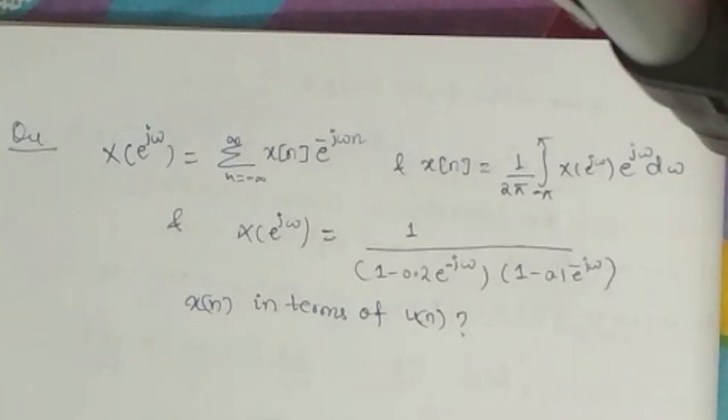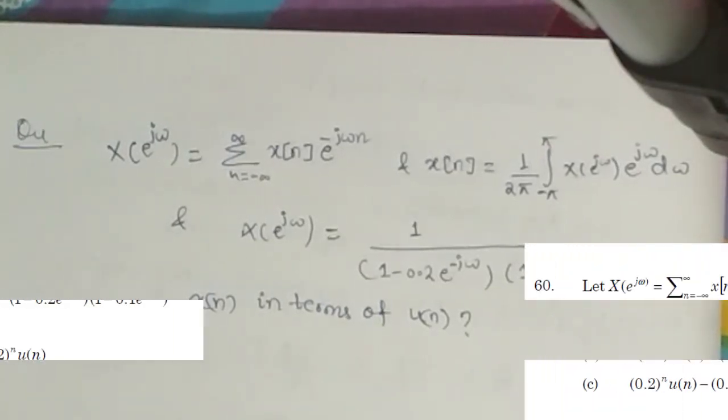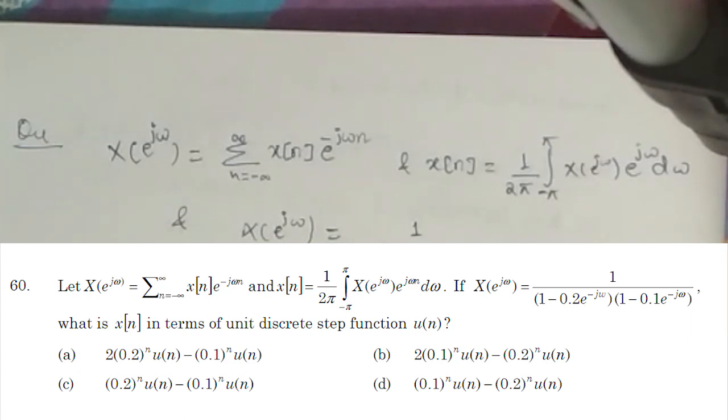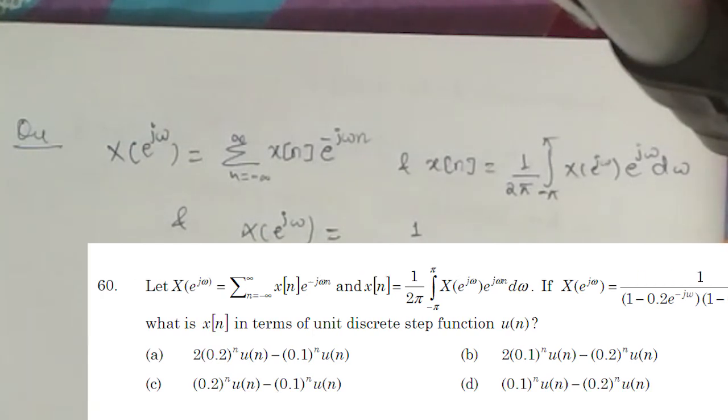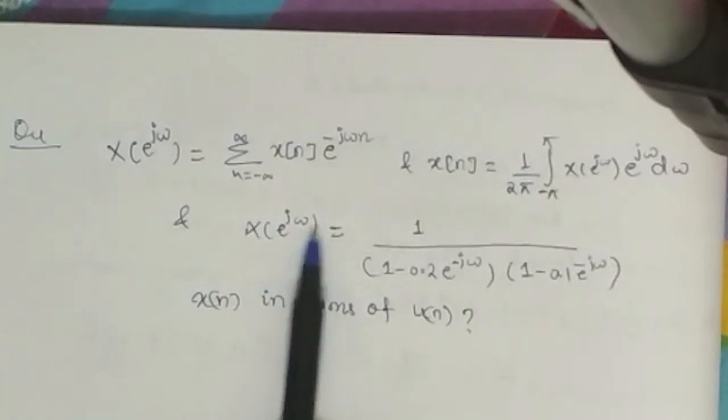Hello friends, welcome to Gate Gyan. This is a 2018 paper question. In this question we have given X(e^jω), and we have a relation between X(e^jω) and x(n). We have to find the value of x(n) in terms of u(n) for this given X(e^jω).